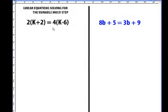We need to solve for k using a multi-step method. The first thing we need to do is use the FOIL method to get rid of the brackets.